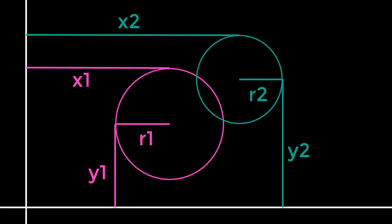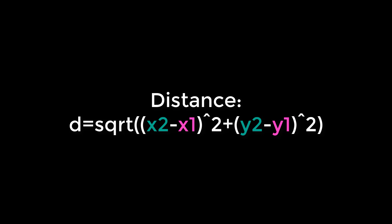So the first step is to calculate the distance between the circles and that can be done using this formula. And I should just clarify, this is the distance between the centers of the circles, which I'm assuming that when you have the position of a circle, that position is the position of the center of the circle. And everyone's seen this before, it's just the Pythagorean theorem.